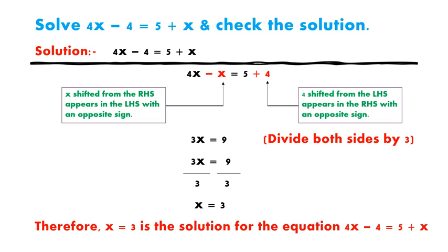So let's move to our topic. Question 1: Solve 4x minus 4 is equal to 5 plus x and check the solution. Now look at the solution. 4x minus 4 which is equal to 5 plus x.